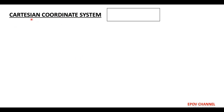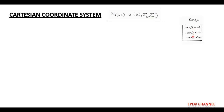First, we discuss the simplest form of coordinate system, that is the Cartesian coordinate system. Its coordinates are x, y, z, and corresponding to these coordinates there are unit vectors: unit vector x, unit vector y, and unit vector z. The range of coordinates x, y, and z is from minus infinity to plus infinity. Cartesian coordinates are represented on x, y, z axes. This system is an orthogonal system where all three axes are mutually perpendicular to each other.